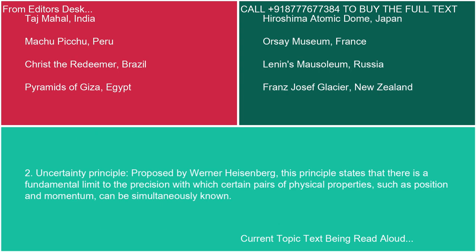2. Uncertainty Principle: Proposed by Werner Heisenberg, this principle states that there is a fundamental limit to the precision with which certain pairs of physical properties, such as position and momentum, can be simultaneously known.